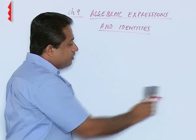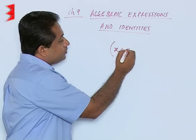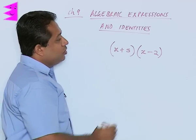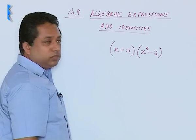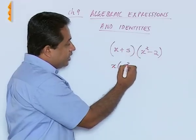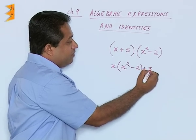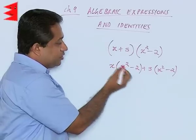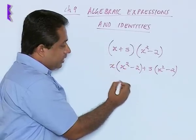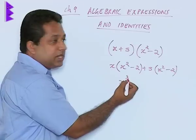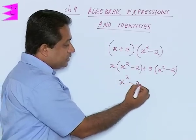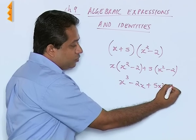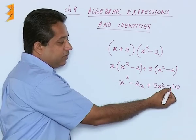Let us try out another example in which we have a positive term multiplied with a negative term. So x plus 5 has to be multiplied with x square minus 2. When I multiply this, this will become x into x square minus 2, and then 5 has to be multiplied with x square minus 2. Opening the bracket: the power of x here is 1 and the power of x here is 2, so when I multiply this, 1 plus 2 becomes 3 — the powers are added. x into 2 will become 2x, but there is a negative sign here. Then 5 into x square, we get 5x square, and 5 into minus 2, we get minus 10 because there is a negative sign.